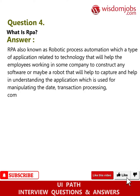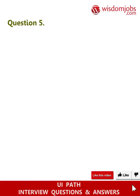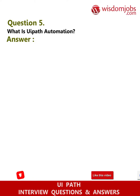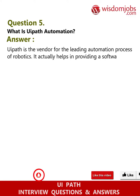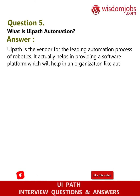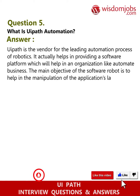Question five: What is UiPath automation? Answer: UiPath is the vendor for the leading automation process of robotics. It helps in providing a software platform that helps an organization automate business. The main objective of the software robot is to help in the manipulation of the application presentation layer, the way any human would do.